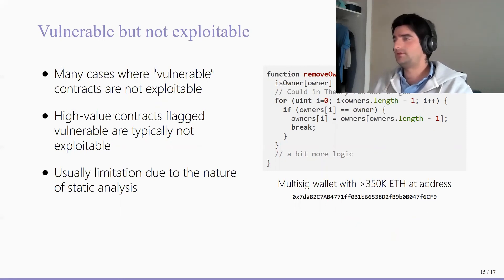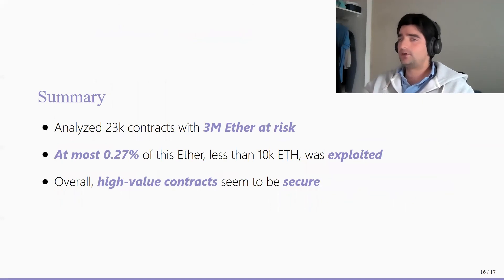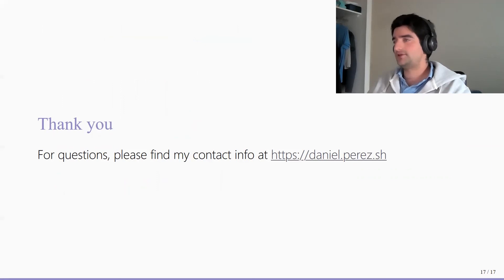We also found that many contracts were vulnerable but not actually exploitable. For example, if the number of owners grew too large a contract would never be able to execute anymore — flagged by many static analysis tools — but since the owner list is only controlled by existing owners, there is very little chance for such a problem to actually occur. In summary, we analyzed these contracts and found that only a very small portion could potentially be at risk of exploitation, and overall high-value contracts appear to be very secure. Thank you very much for listening; if you have any questions you can contact me at the URL provided.